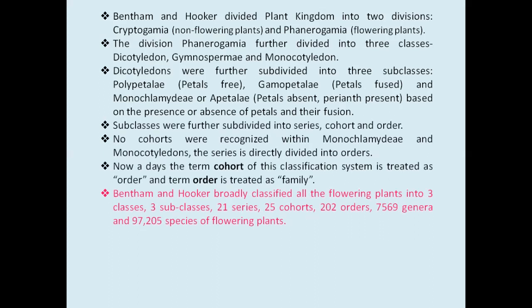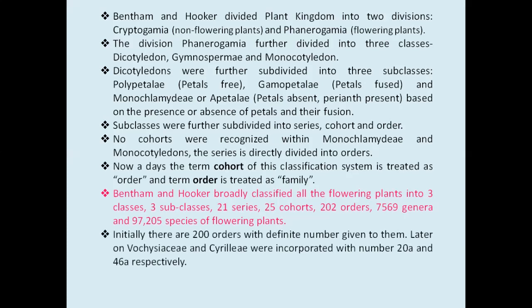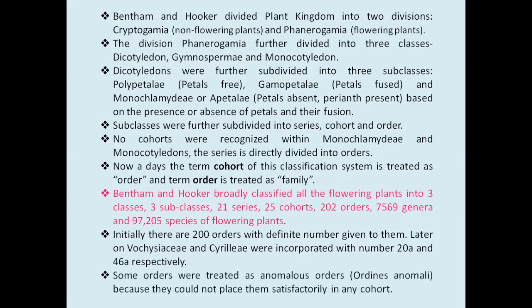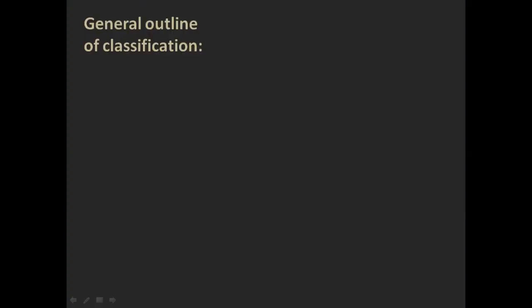Bentham and Hooker broadly classified all flowering plants into three classes, three subclasses, 21 series, 25 cohorts, 202 orders, 7,569 genera, and 97,205 species of flowering plants. Initially there were 200 orders with definite numbers given to them; later on, Welwitschia and Casuarina were incorporated with numbers 20A and 46A respectively. Some orders were treated as anomalous orders because they could not be placed satisfactorily in any cohort.